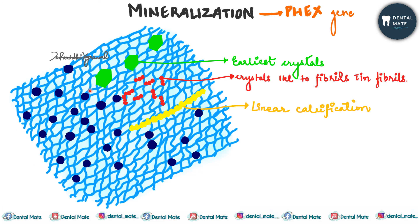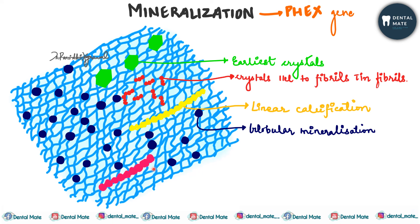Globular mineralization, or calcospheric calcification, is a spherulite form of calcification in which minerals are deposited in several areas of the matrix simultaneously. These globular masses develop, enlarge, and eventually form a single calcified mass. This type of globular mineralization takes place in circumpulpal dentine just below the mantle dentine. A combination pattern, where the globular phase alternates with the linear phase, is seen in the remaining circumpulpal dentine.